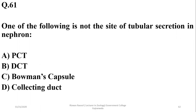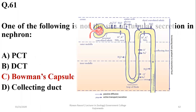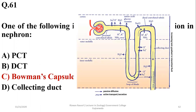One of the following is not the site of tubular secretion in the nephron. All parts of the nephron are involved in reabsorption as well as tubular secretion, except Bowman's capsule, which is the site for filtration in addition to the glomerulus.